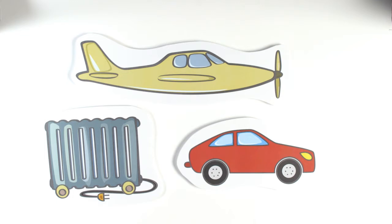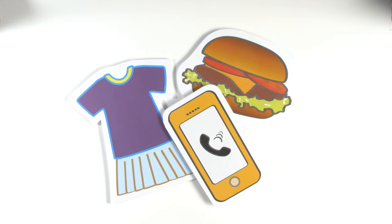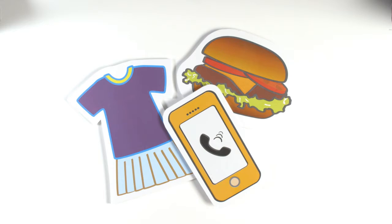We emit carbon dioxide when we drive our cars, take a plane ride, or heat our homes. Food, clothes, mobile phones, and other products use fossil fuels in their production and transportation.